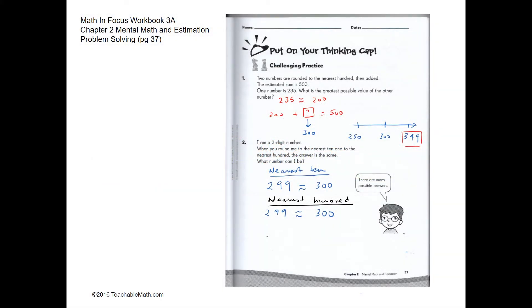Let's look at the first problem. For the first problem over here, two numbers are rounded to the nearest hundred and then added. The sum is 500.